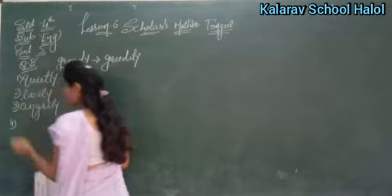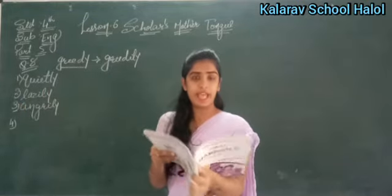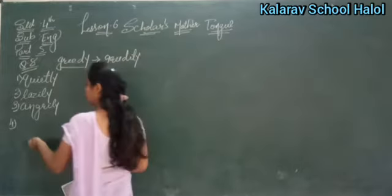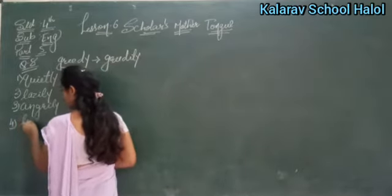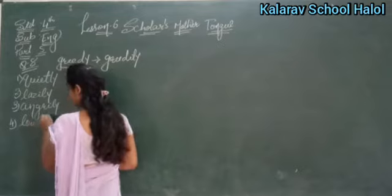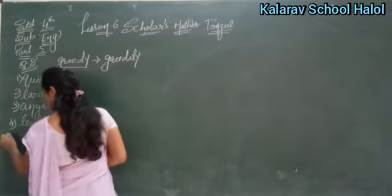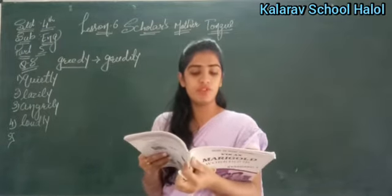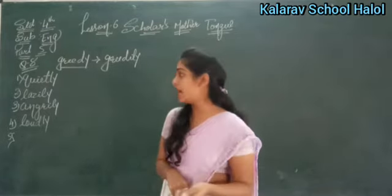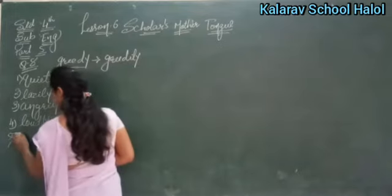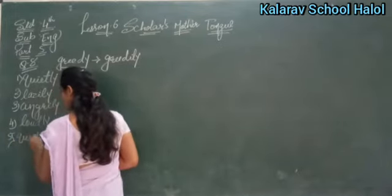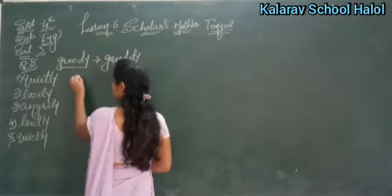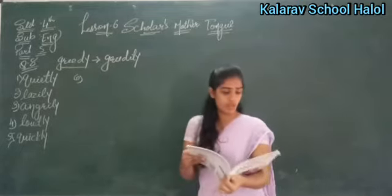अब देखो four number क्या है? 'We shouted dash.' Bracket में क्या है? L-O-U-D, loud. तो loud becomes loudly — L-O-U-D-L-Y. Loudly. Right? अब next देखो: 'I must finish my work dash.' Bracket में दिया है quick. तो quick का adverb क्या बनेगा? Quickly बनेगा। Quick, so quickly.